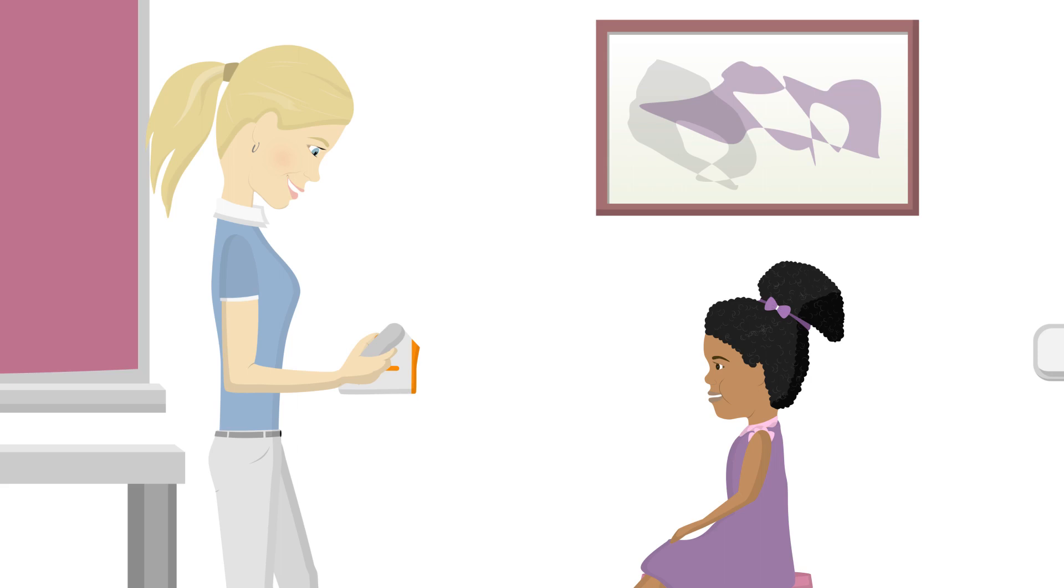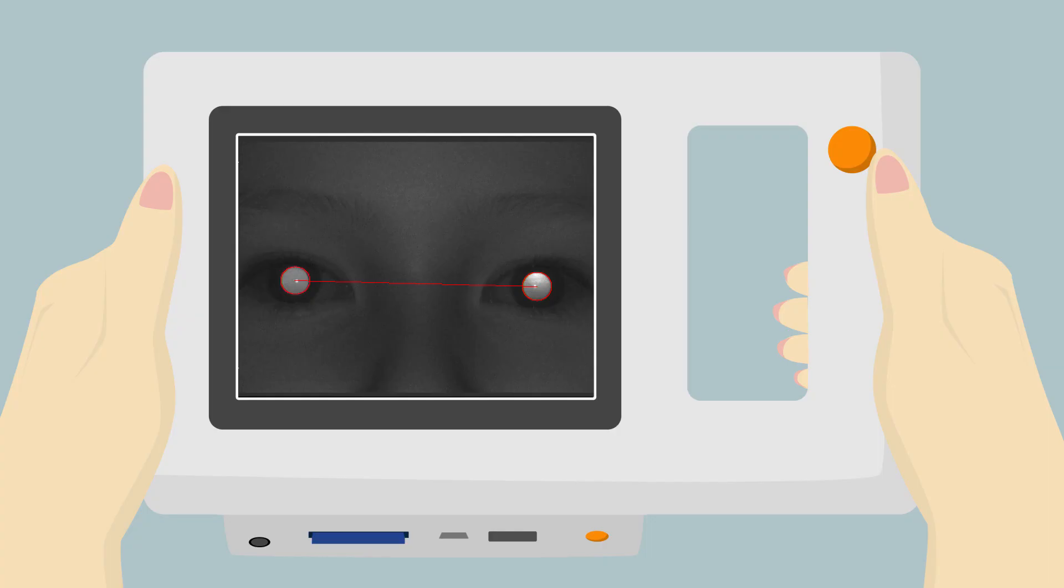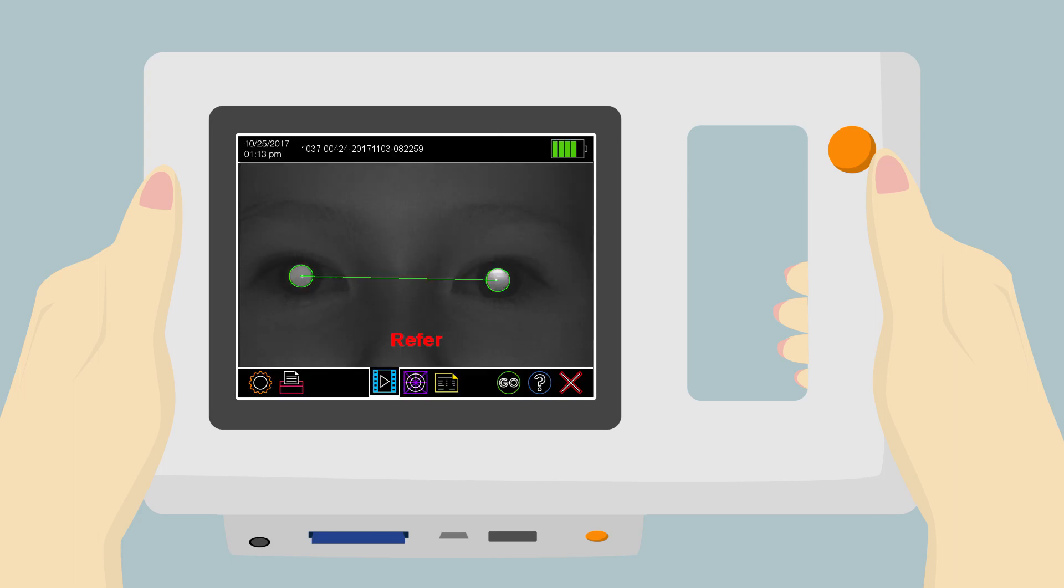Once Anna sees that each pupil is surrounded by a green circle, she needs to pause for just a moment. When this happens, another attention-grabbing warble sound will be emitted. A ping sound indicates the end of the measurement. The screening result, as well as the camera image, will appear on the screen.